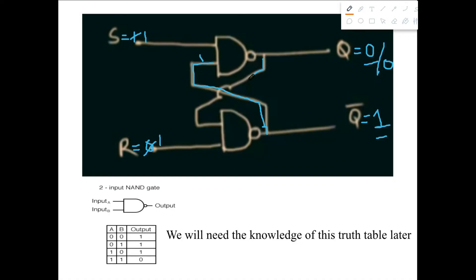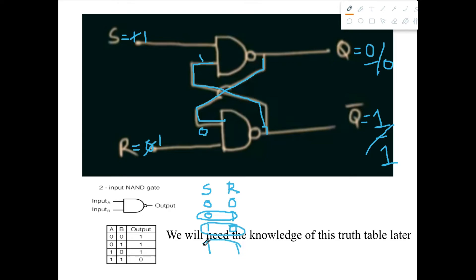With S equals one and the feedback from Q prime being one, one and one produce zero at the output — same as before. And with R equals one and the feedback from Q being zero, one and zero produce one — same as before. So again, changing inputs to one and one preserved the previous output: Q equals zero, Q prime equals one. With two inputs S and R, we can get four possible combinations: zero-zero, zero-one, one-zero, and one-one.